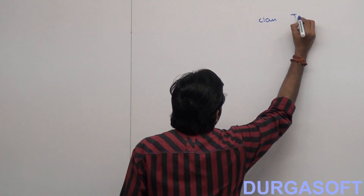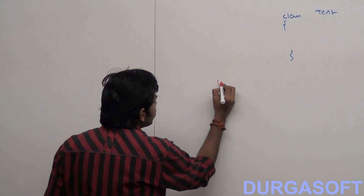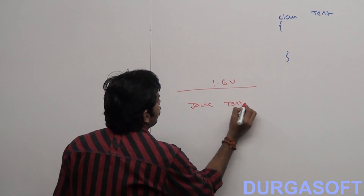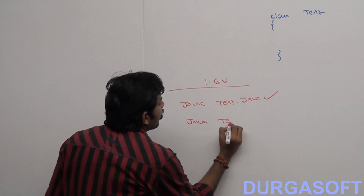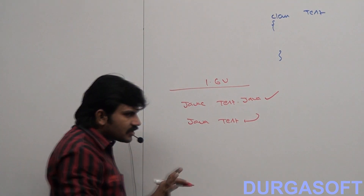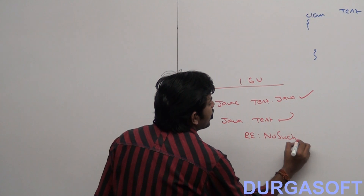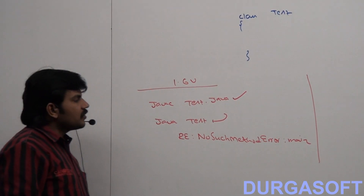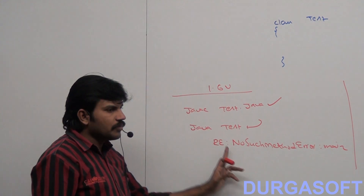Case one. Observe first and then you can take notes. I am taking class Test. Until 1.6 version, if I compile this code — javac Test.java — the code compiles fine. But if I run Java Test, the class doesn't contain a main method, so we are going to get a runtime exception: NoSuchMethodError colon main.